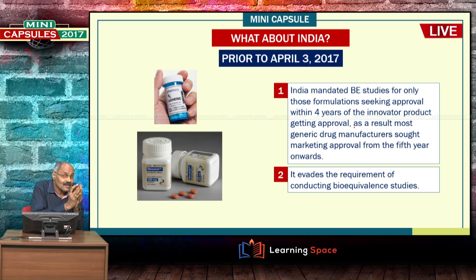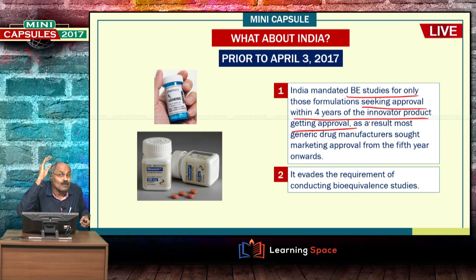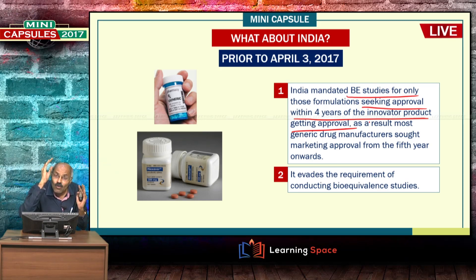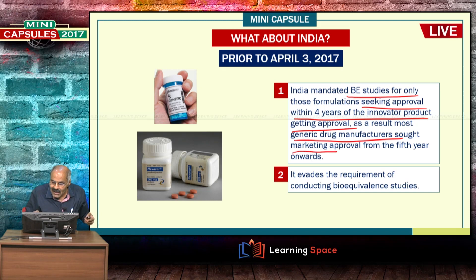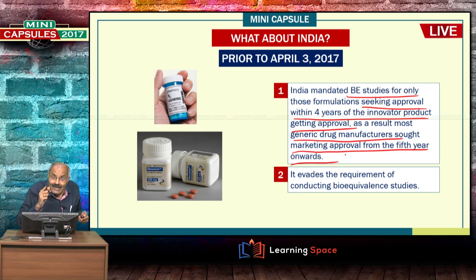Looking at India, prior to April 3, 2017, when the Drugs and Cosmetics Rules were changed, India mandated bioequivalence studies only for those formulations seeking approval within 4 years of the innovator product getting approval. As a result, most generic drug manufacturers sought market approval from the 5th year onwards so as to avoid bioequivalence studies.